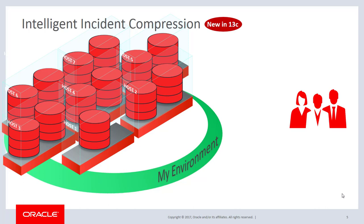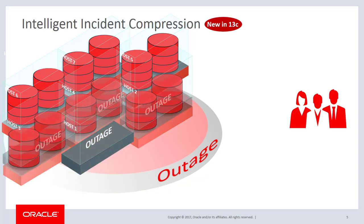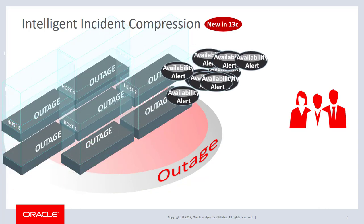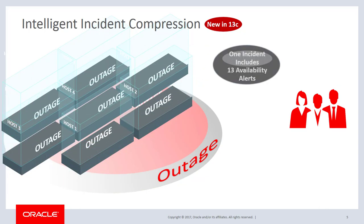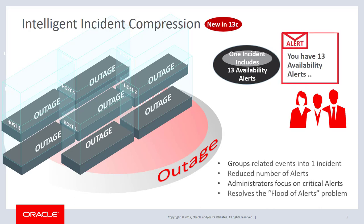Using this feature, when a host, multiple hosts, or even the entire site goes down, Enterprise Manager groups related events into a single incident. As a result, you can configure it to send out only one email notification to administrators. This way, you can focus on real issues that truly need your attention. This is a high-level overview of the incident compression feature.